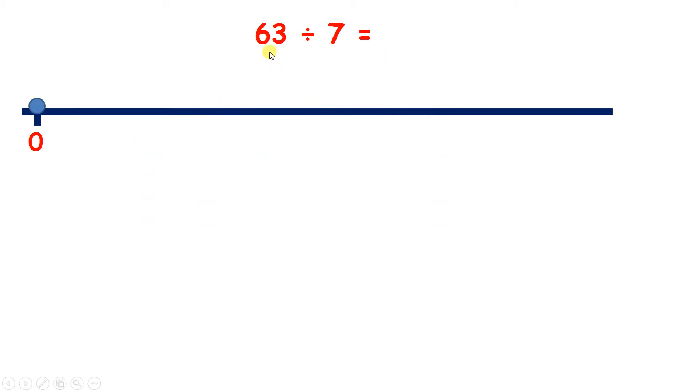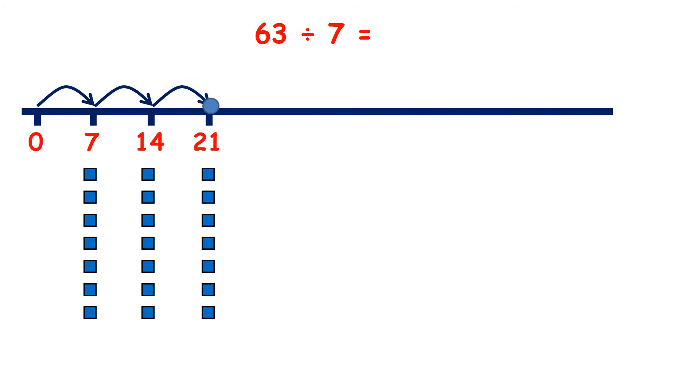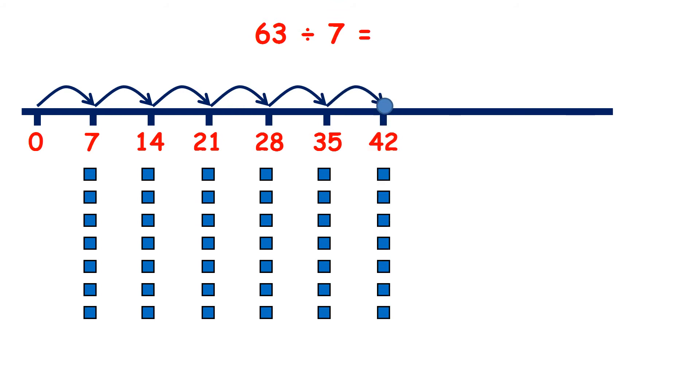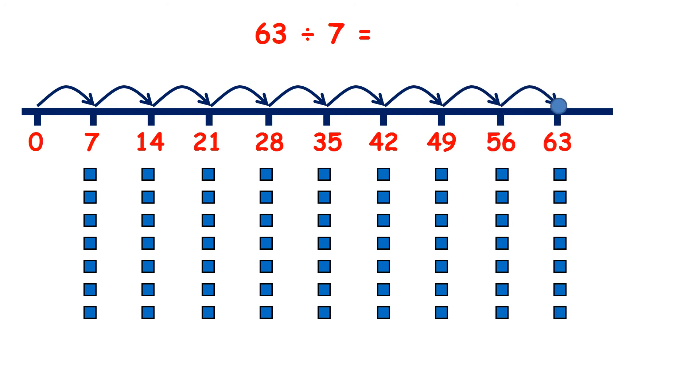Now 63 divided by 7, so we can count 7, 14, 21, 28, 35, 42, 49, 56, 63. So that's 1, 2, 3, 4, 5, 6, 7, 8, 9 jumps, so 63 divided by 7 is 9.